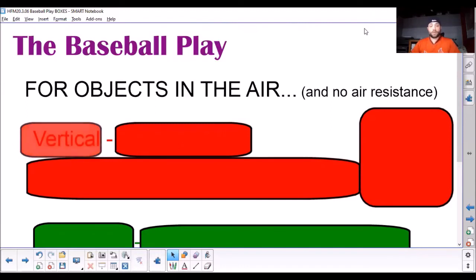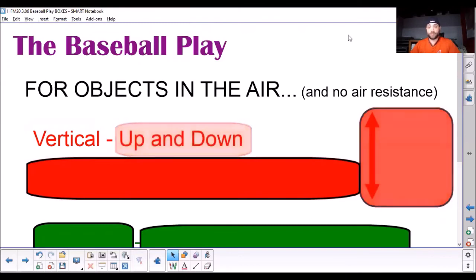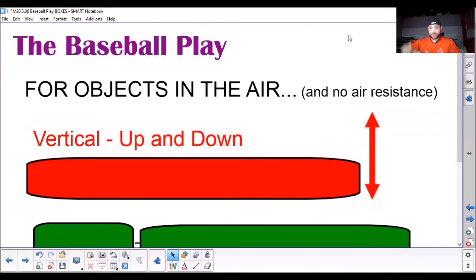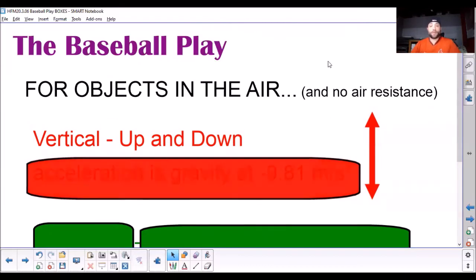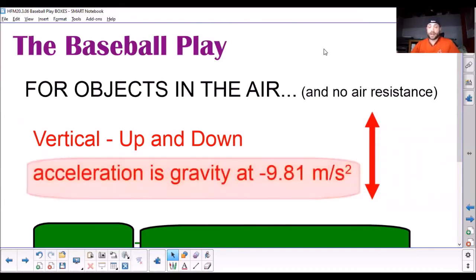So, for one, the vertical motion of the object is the up and down motion of the object. So, that's just the motion of it moving up and down. That motion has an acceleration that is due to gravity. And it's negative 9.81 meters per second squared. So, that is the vertical motion of the object.